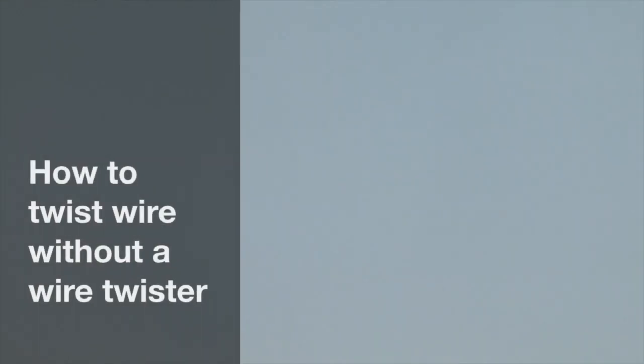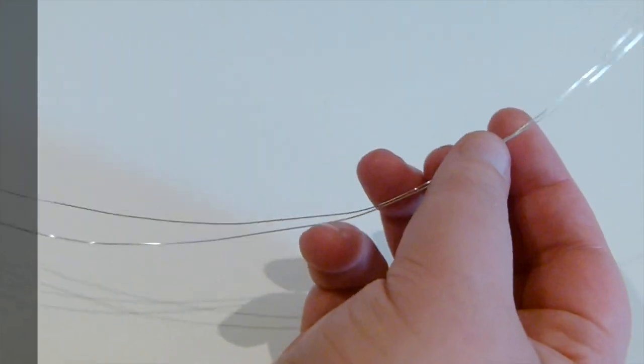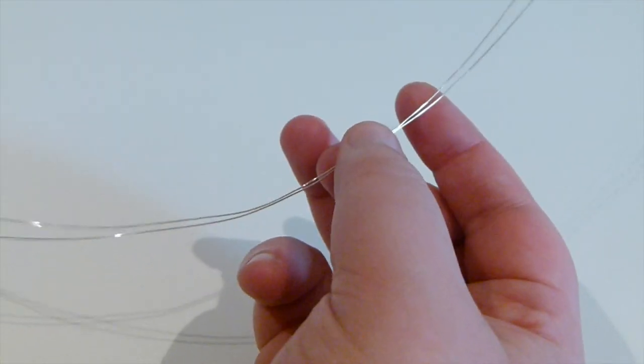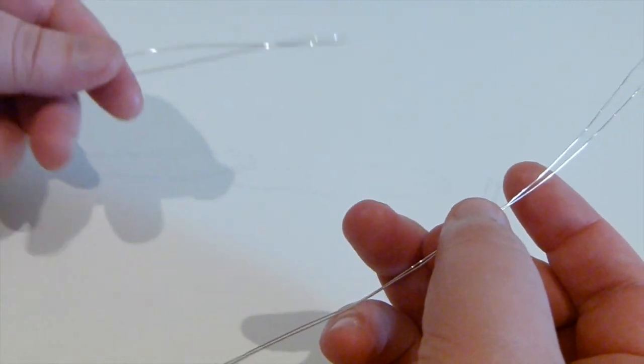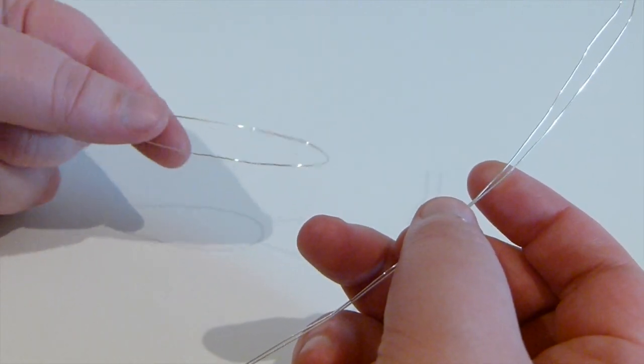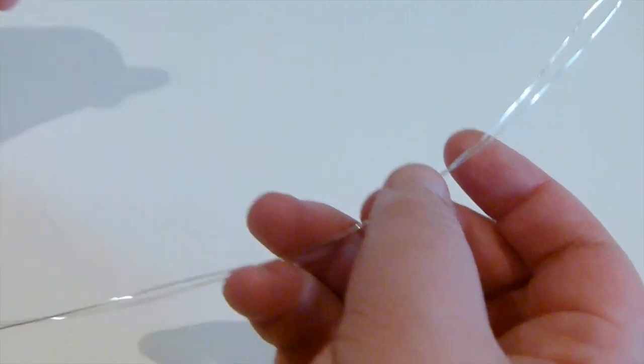Hello there everyone. Today I want to show you how to twist some wire without a wire twister. In this case I'm going to be using some 0.4mm wire. You can use any gauge that you want. I'm just going to show you it with this.